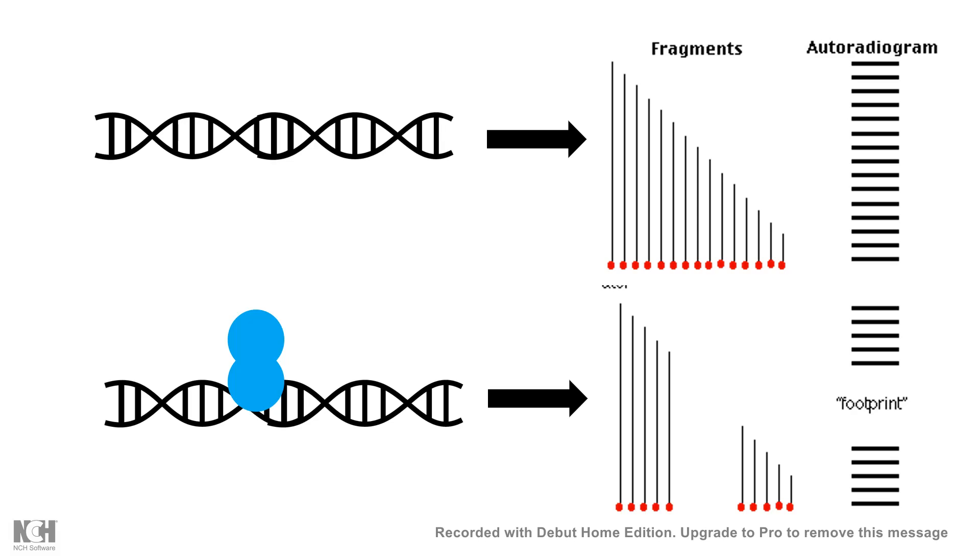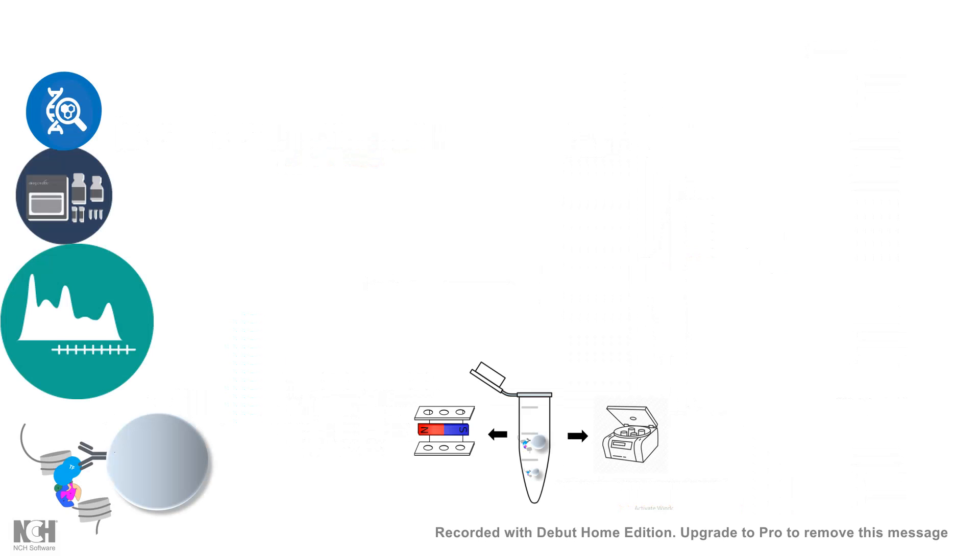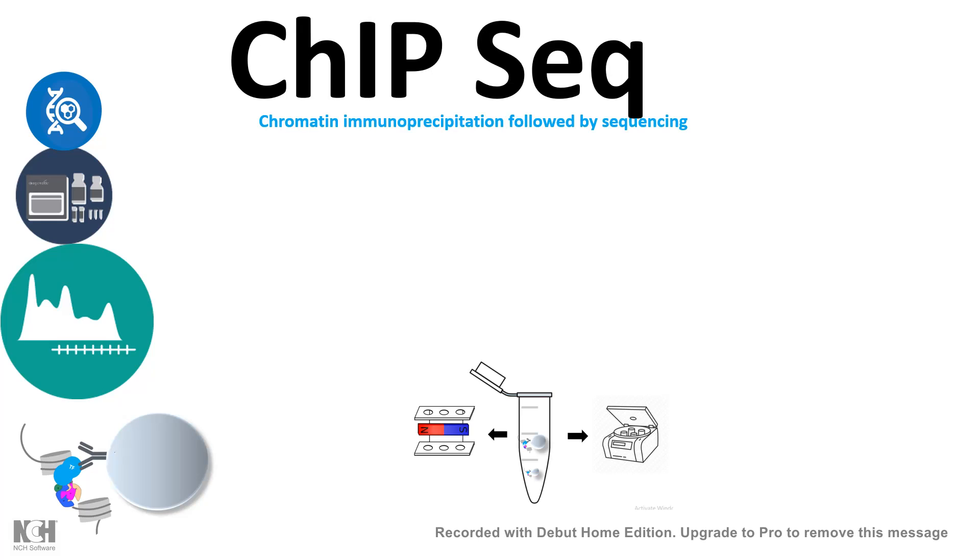But all these methods are pretty qualitative. So one quantitative method is chromatin immunoprecipitation followed by sequencing, which would tell us what exact sequence our protein of interest is binding.